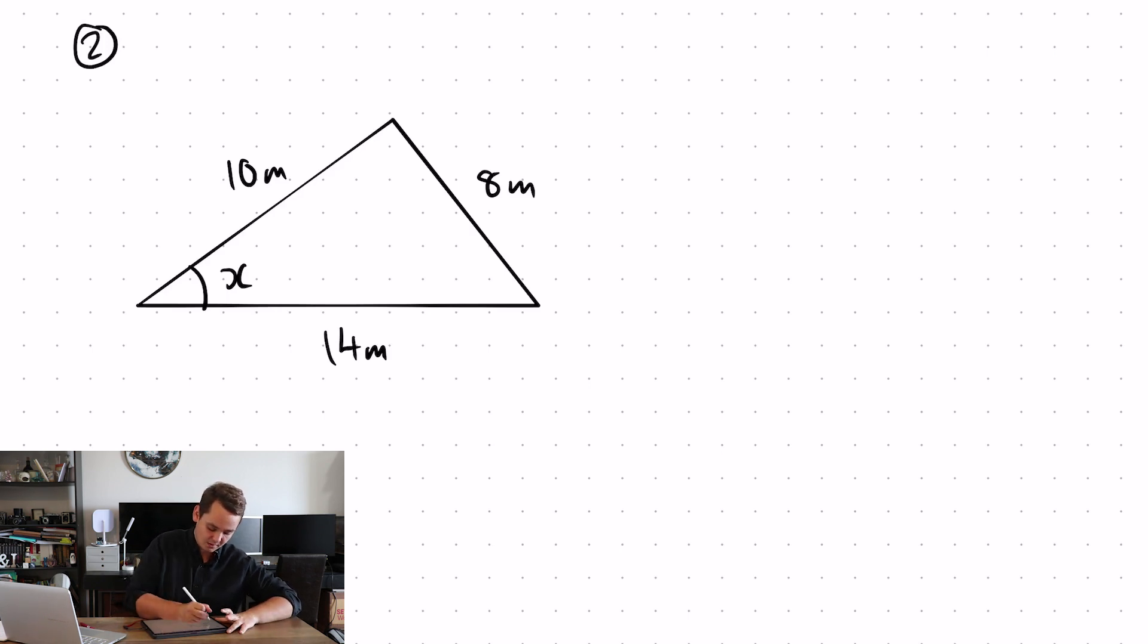So, first of all, label your unknown angle C, side opposite, lower case C, most important bit. The other two sides, A and B, in either order.